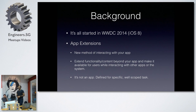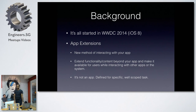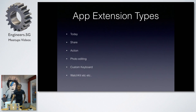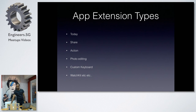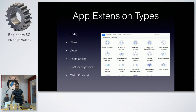Nowadays it has become mandatory for every iOS app to have some sort of App Extension. We started with a small list — like six or seven of them: Today Extensions, Share, Action, Photo Editing, Custom Keyboard, Watch Kit, and others. Currently they have around 19 or 20 different types.